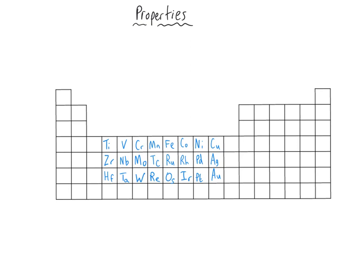Let's take a look at the transition elements themselves. The transition elements are the middle block of the periodic table, and I've drawn them here with their symbols. These are maybe what you might think of as the typical metals. We have gold, silver, copper, iron, nickel, and chromium.